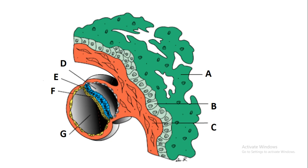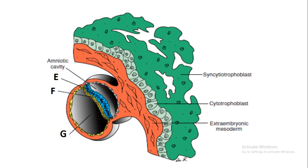Let's look at some features you need to expect in the embryo during week 3. When you look at A, A is simply the syncytiotrophoblast. B is the cytotrophoblast. C is the extraembryonic mesoderm. D is the amniotic cavity, which is being formed from the epiblast.